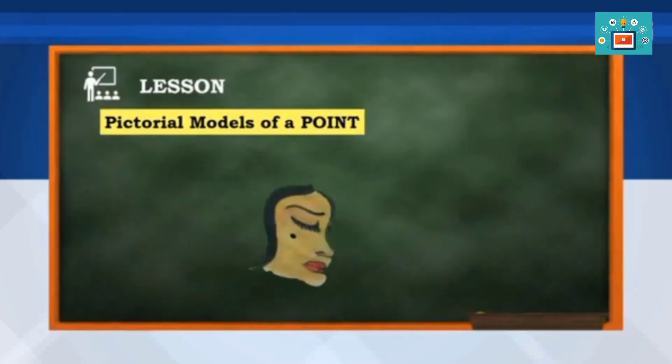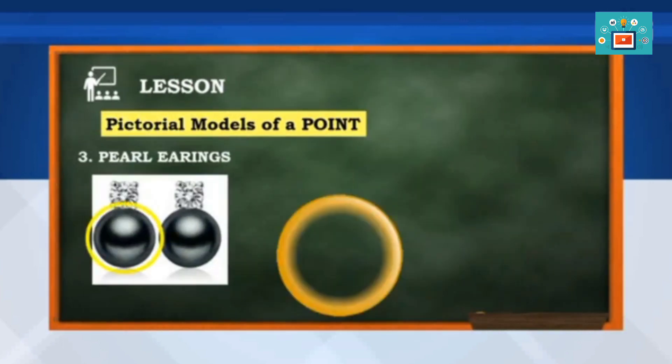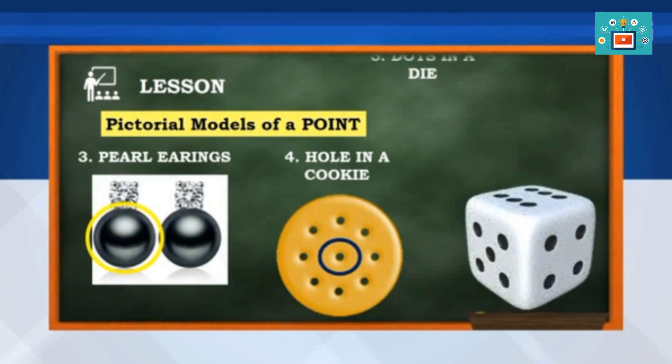Second, pictorial model is a mole. And this is point L. And these are more pictorial models of a point. Pearl earrings, hole in a cookie, and dots in a dive.